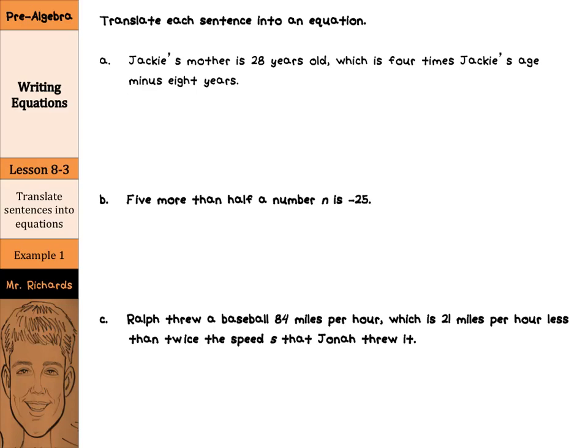Our first examples have us translating sentences into equations. First: Jackie's mother is 28 years old, which is four times Jackie's age minus eight years. We're going to start off with Jackie's mother's age, which is 28, and set that equal to four times Jackie's age. We need a variable for Jackie's age — we'll call it A for age. So four times A minus eight years. If you wanted to solve it, you could get nine years, but we don't need to worry about that right now.